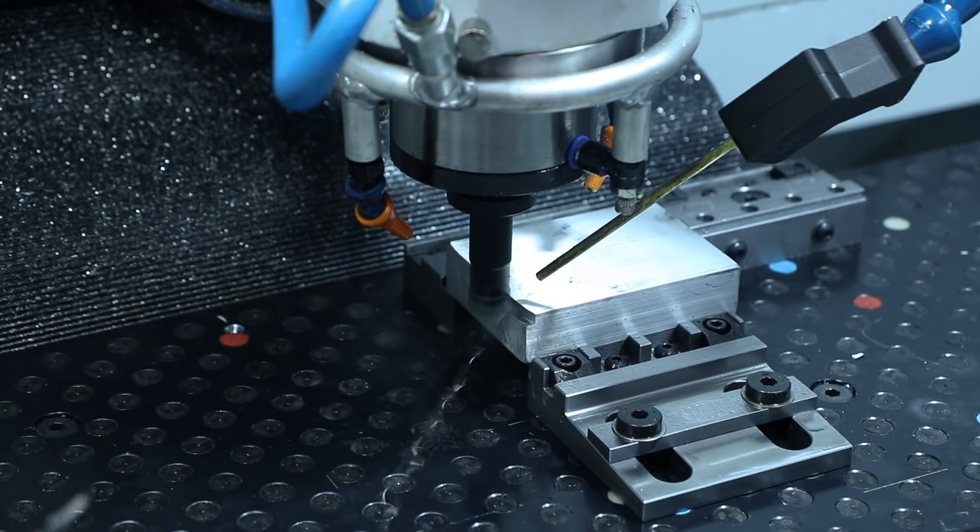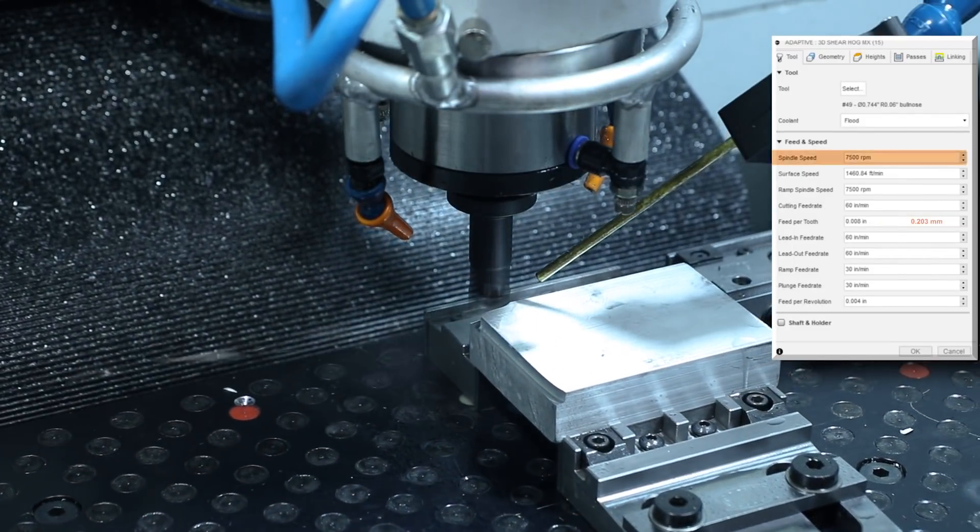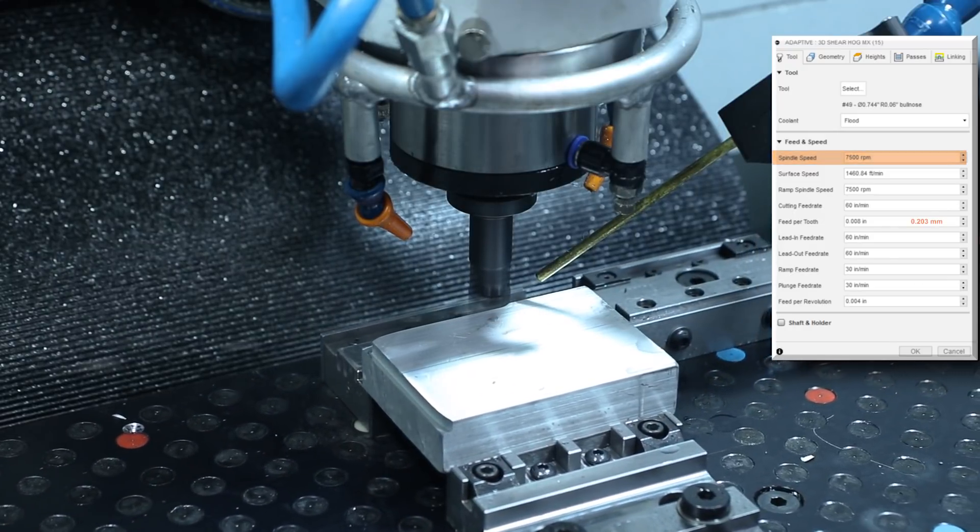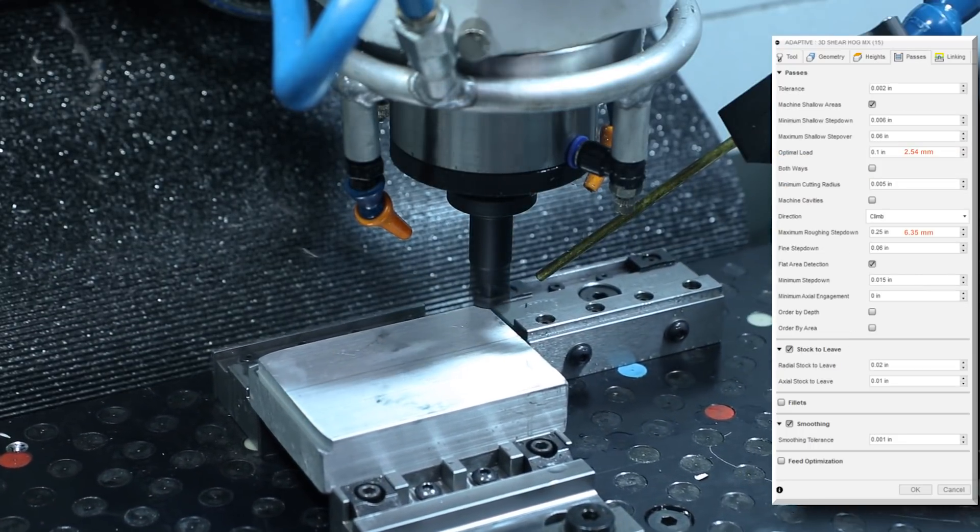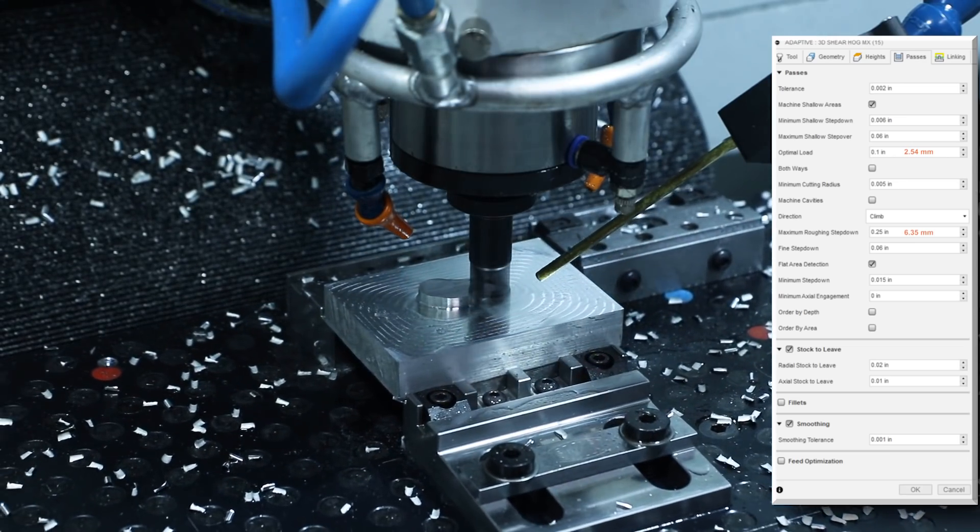So starting off with that tool in a 3D adaptive roughing operation, running at max RPM of 7,500 and 8 thousandths feed per tooth. Depth of cut is 250 thousandths, width of cut is 100 thousandths.